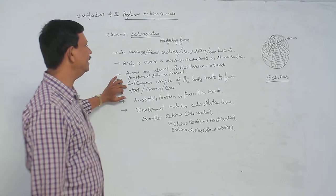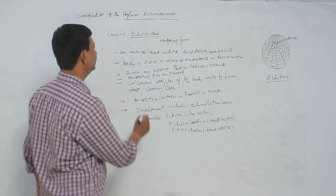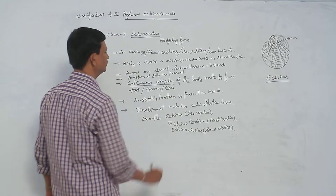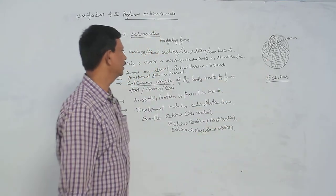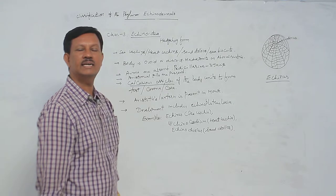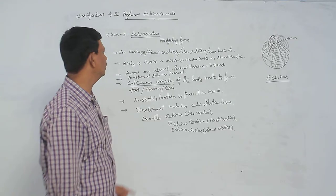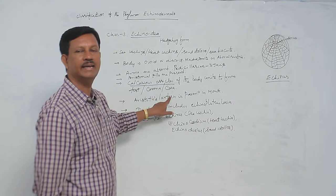The body is externally covered by calcareous ossicles. Calcium carbonate ossicles are present on the body. These ossicles are united with each other and form into test, corona, or case.